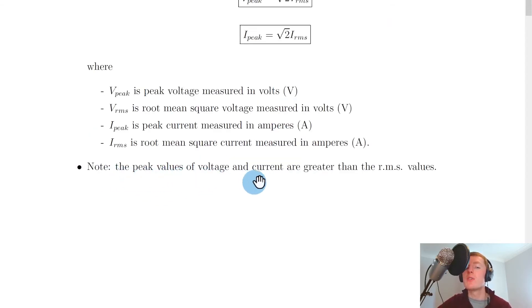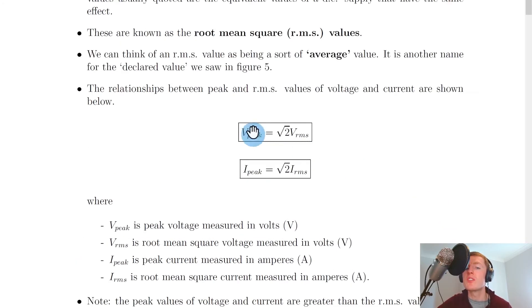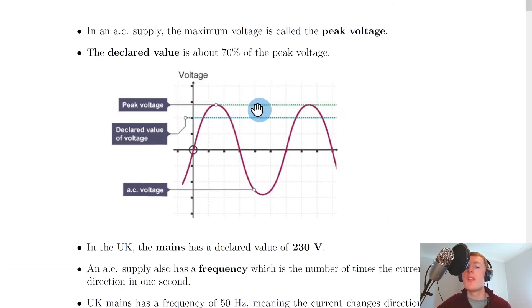Lastly, it says to note that the peak values of voltage and current are greater than the RMS values. And that's because root two times something is going to be the same as roughly 1.4 times that thing. So the peak values should be greater than the RMS values. And that kind of links in with our picture here, where we see that the peak values here are higher than the RMS values.